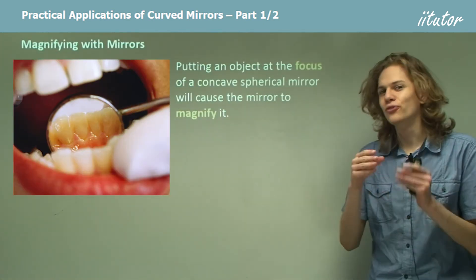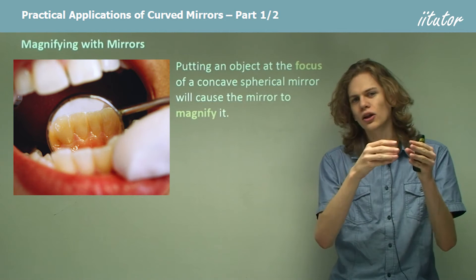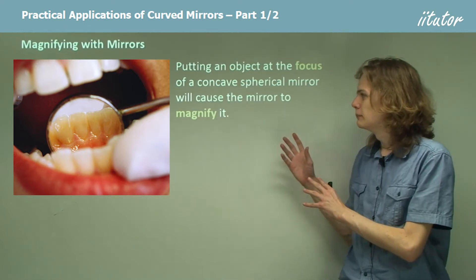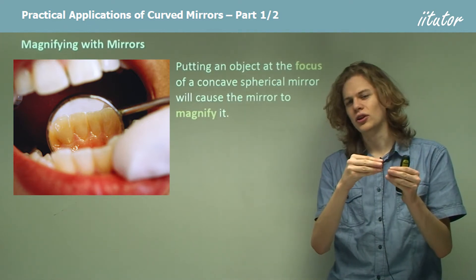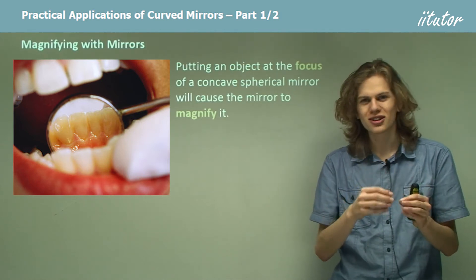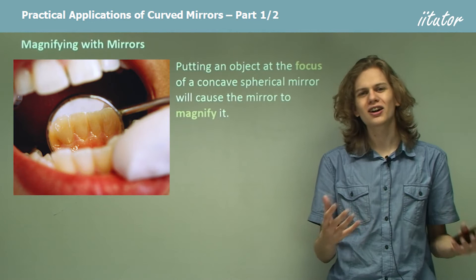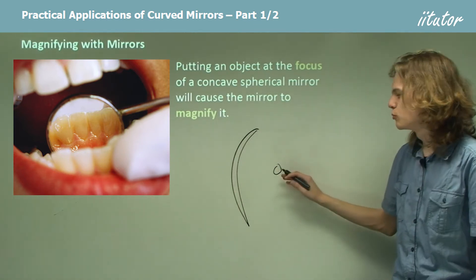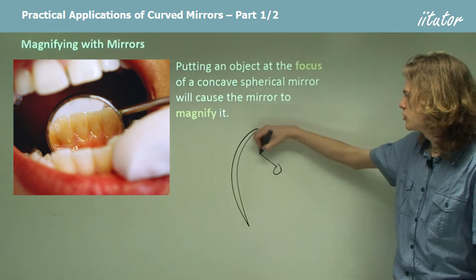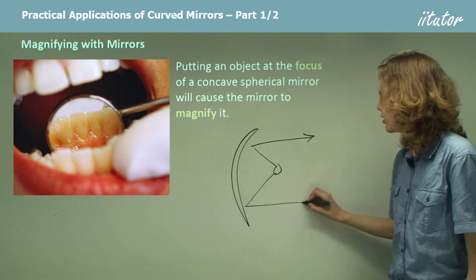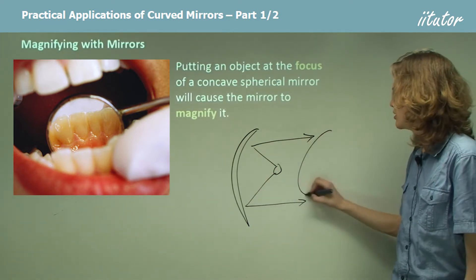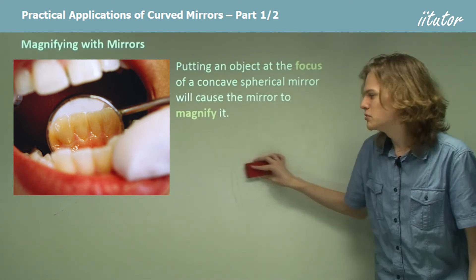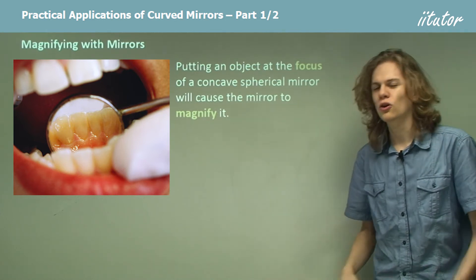If we put an object at the focus, the light from that light source will bounce outward and be reflected. In a concave mirror, the focus is the smallest reflected image we can get, so if we put something at the focus then any reflection we get from it will be larger. If we have a concave mirror and a small object at the focus, light from it will be bounced outwards and the projected image will appear to be larger. This means that if we want to magnify an image, we can put it at the focus of a concave mirror.